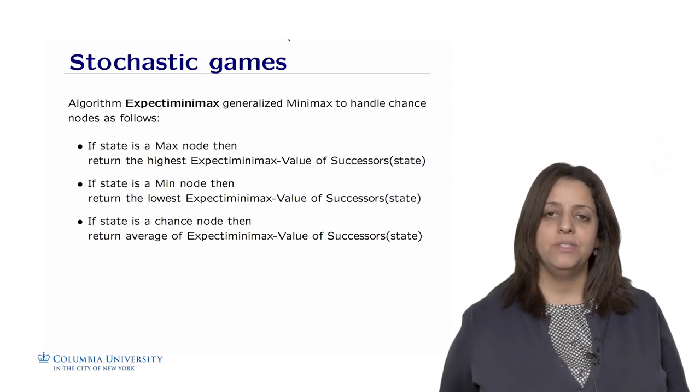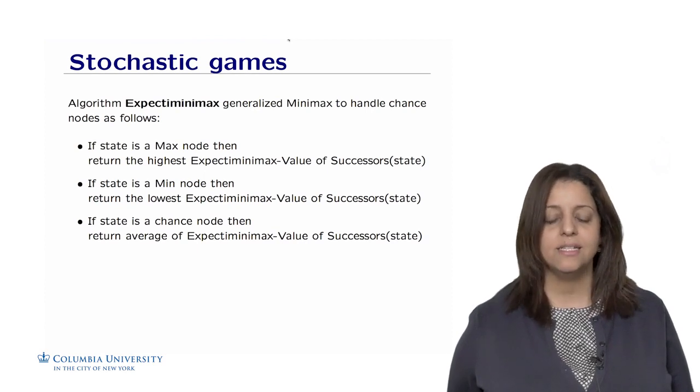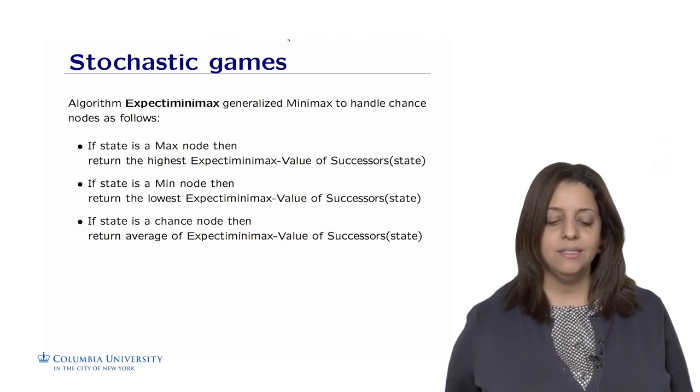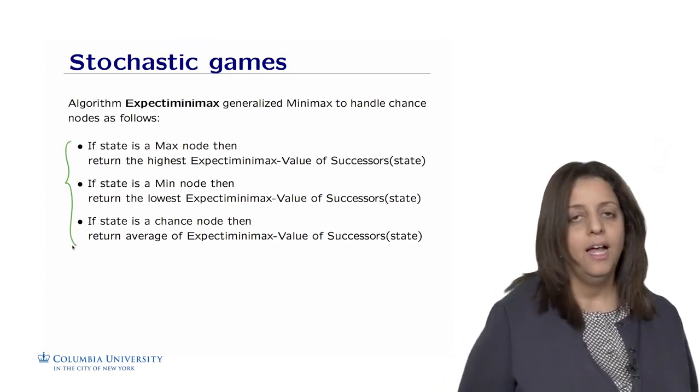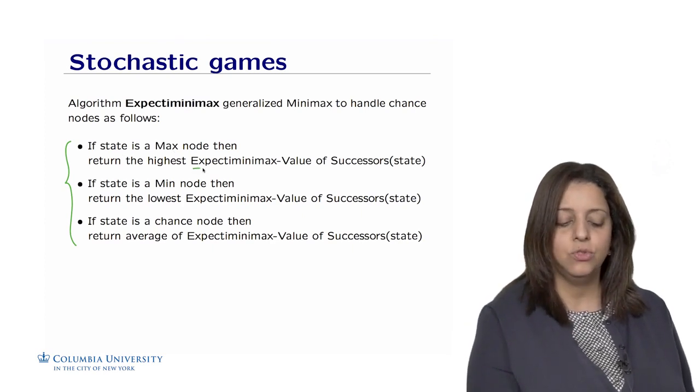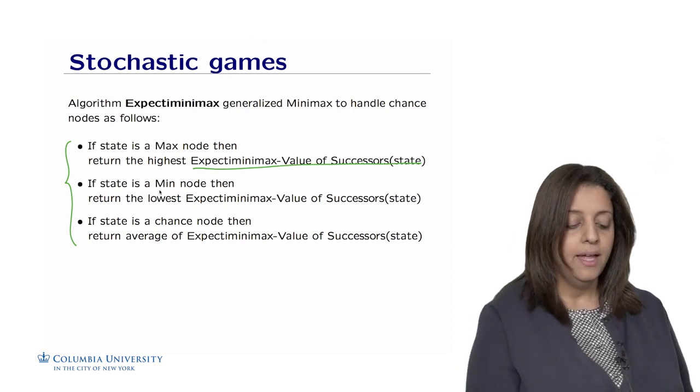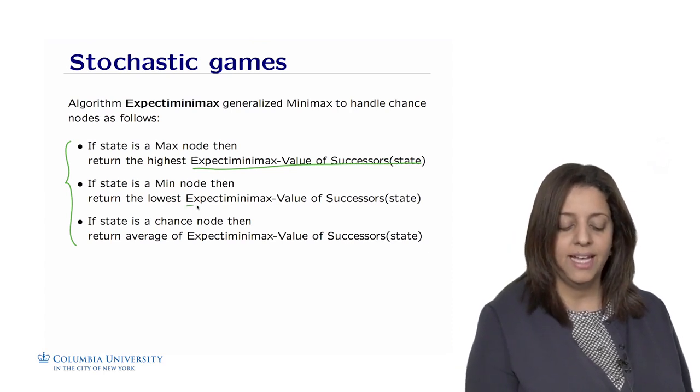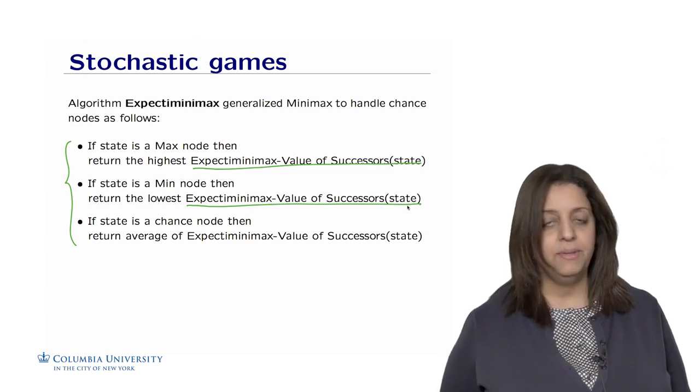The algorithm that can handle this randomness in the game is called expected minimax, which generalizes the minimax algorithm to handle chance nodes. It's a very similar function that we've seen for minimax. If the state is max, we call expected minimax on all the successors. If the state is min, we call expected minimax for all the successors to minimize for min.